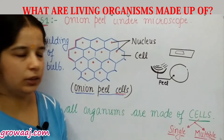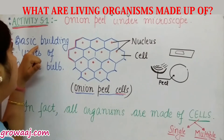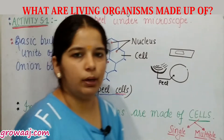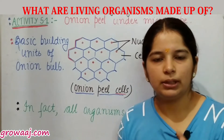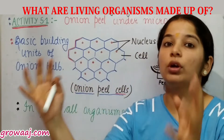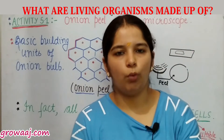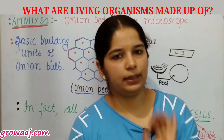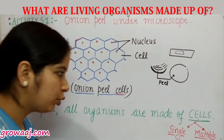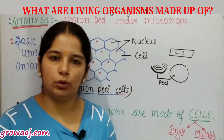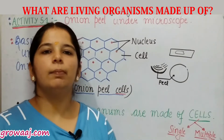These cells are the basic building units of the onion bulb. The cell is known as the basic building unit because many cells together make up a whole structure. This is not only for the onion peel — every living body is made up of cells. So all organisms are made up of cells. Now, those cells can be single or multiple — the body can be made up of one cell, or it can be made up of multiple cells.